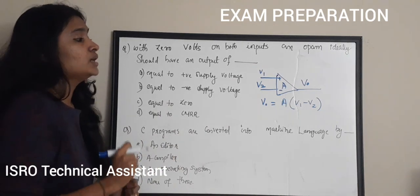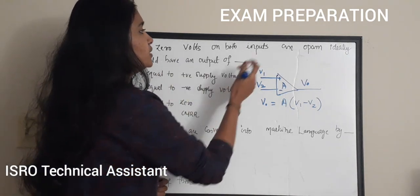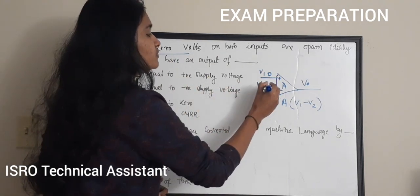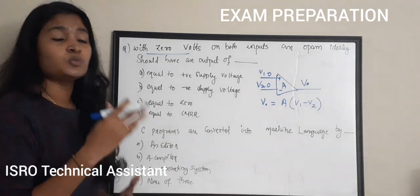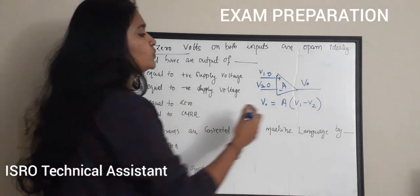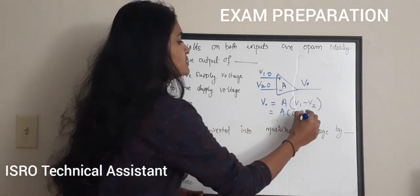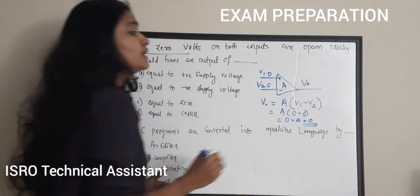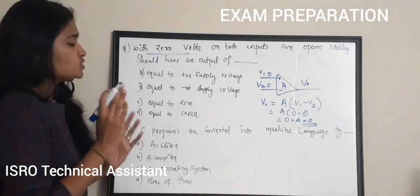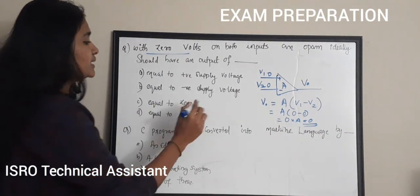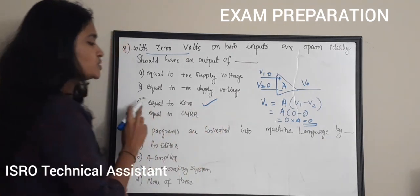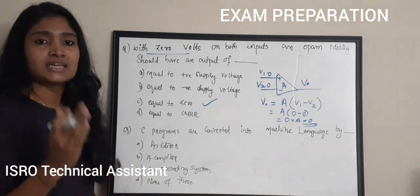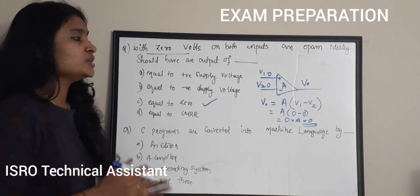Here, both inputs are zero volts, so V_out = A × (0 − 0) = 0. In the ideal case, the output will be zero. Therefore, the correct answer for this question is option C, which is equal to zero.